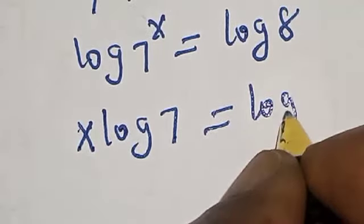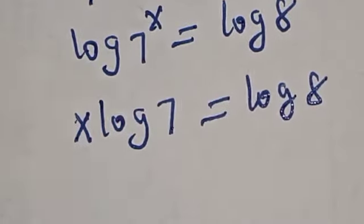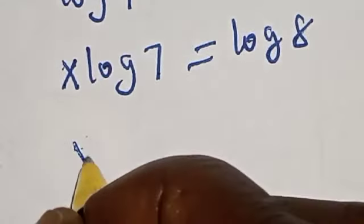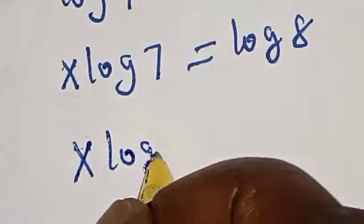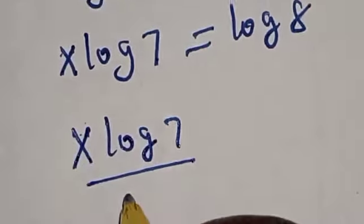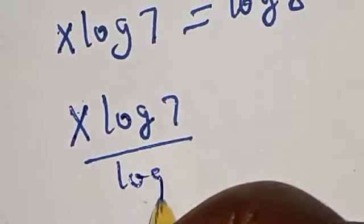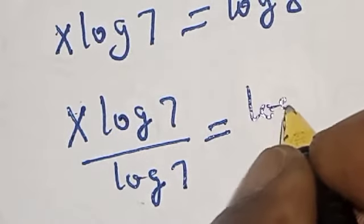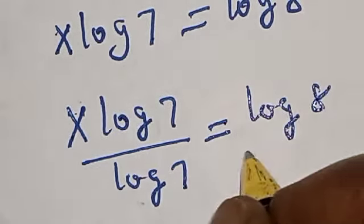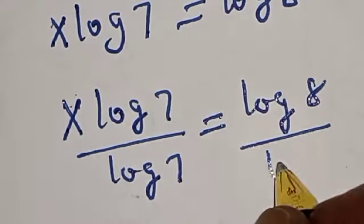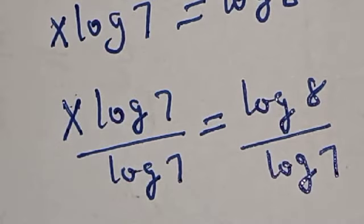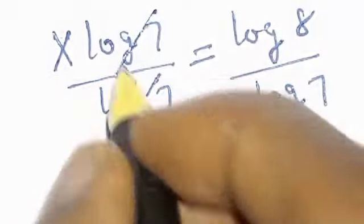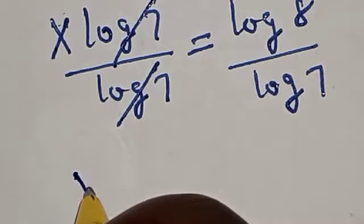Now we are looking for the value of x. Let's divide both sides by log 7. x log 7 divided by log 7 equals log 8 divided by log 7. This one will cancel, so x equals log 8 divided by log 7.